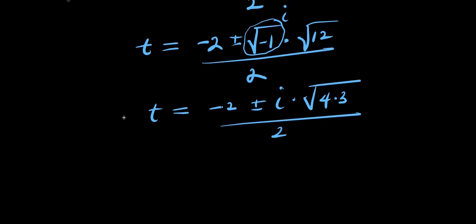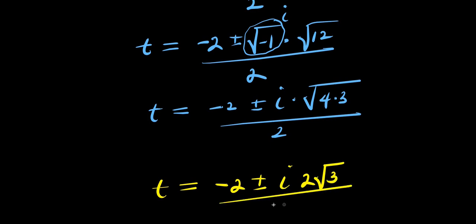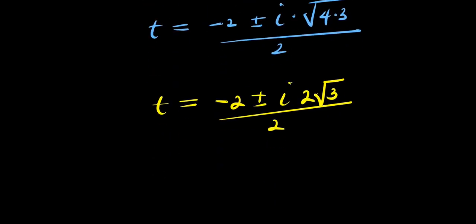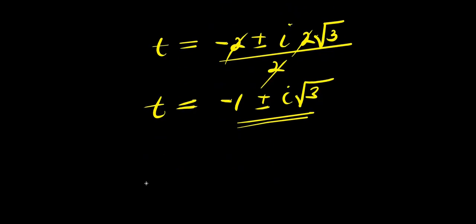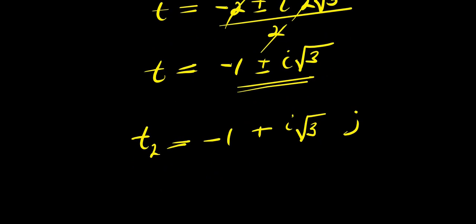So from here, what we are going to have is t equals negative 2 plus or minus i times square root of 4, which is 2 root of 3, divided by 2. Cancelling the 2s, we have negative 1 plus or minus i root of 3. So we have two complex values for t: t₂ equals negative 1 plus i root of 3, and t₃ equals negative 1 minus i root of 3.